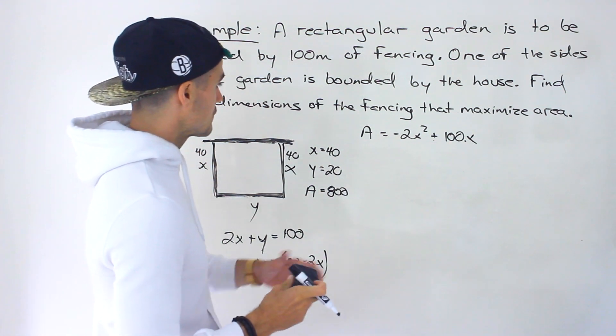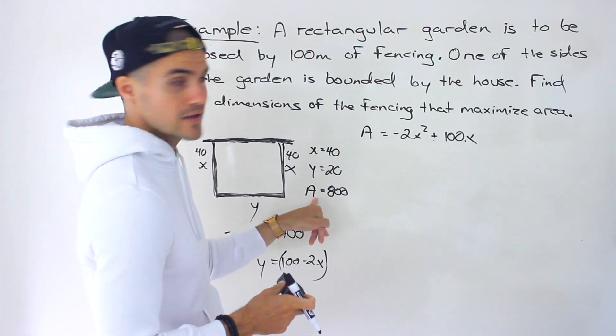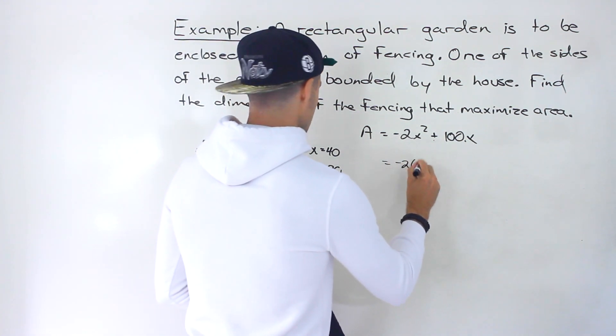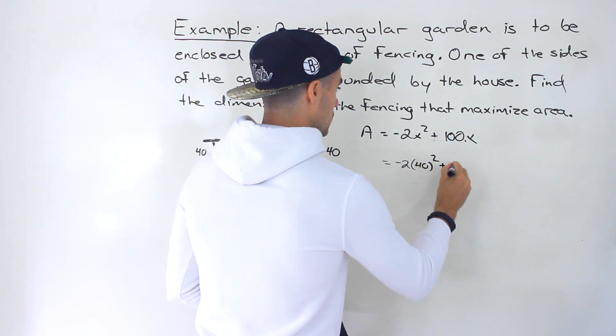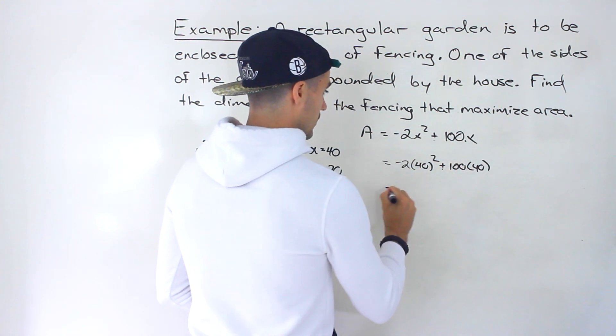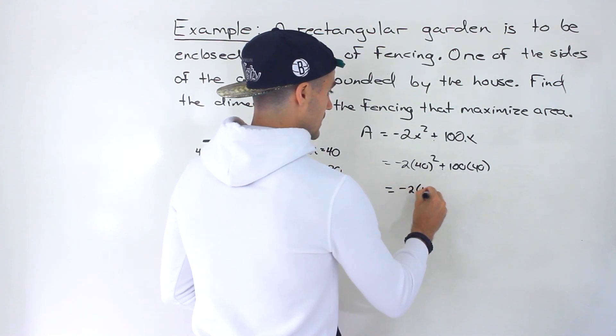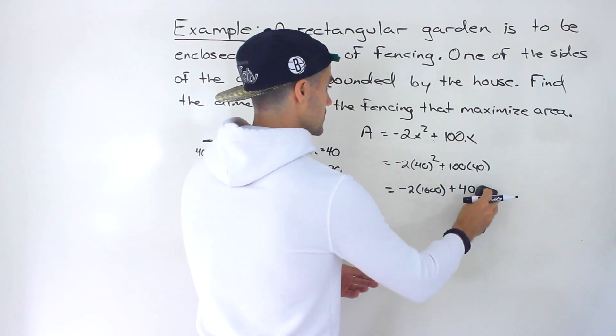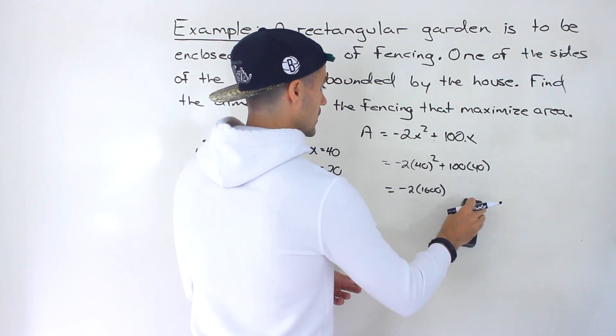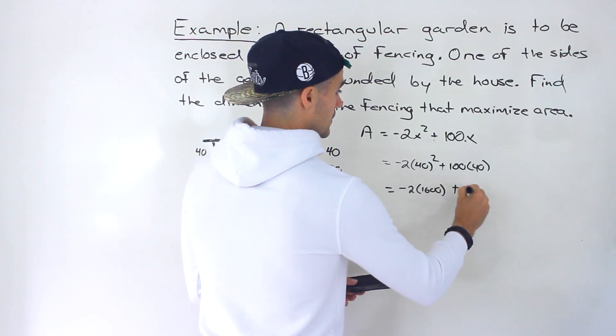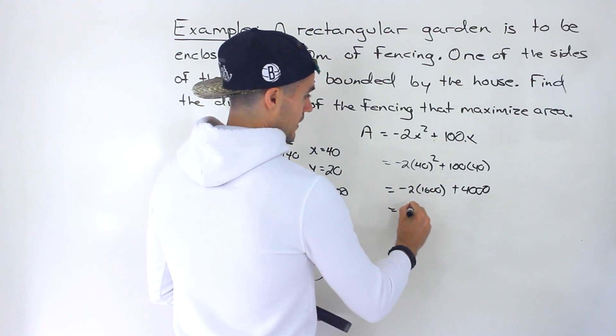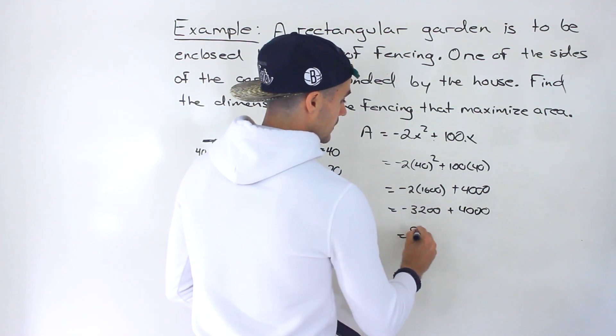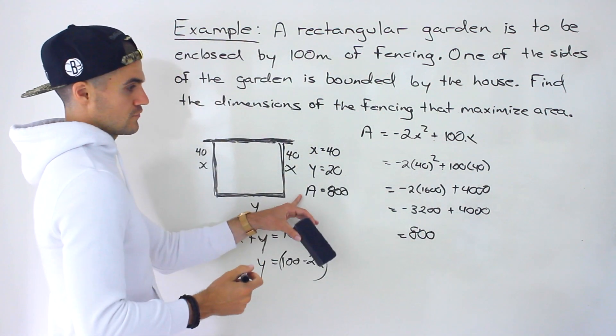And so let's see if we plug in 40 for X over here. Let's see if we get that same area of 800. So we'd end up with negative 2, 40 squared plus 100 times 40, which would give us negative 2, 1600 plus 4000. So we'll have negative 3200 plus 4000, which indeed does give us that area of 800.